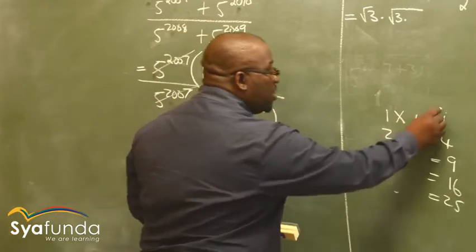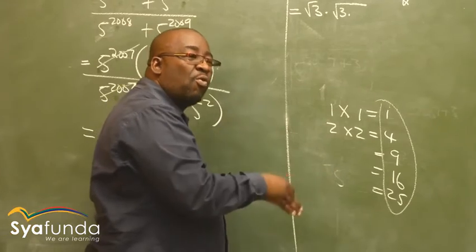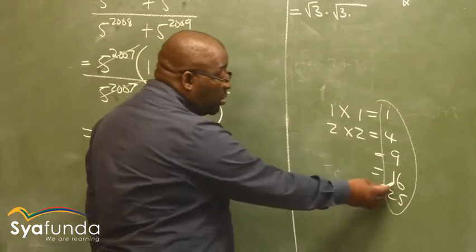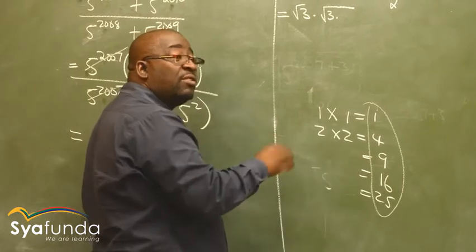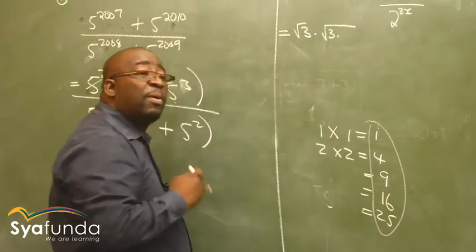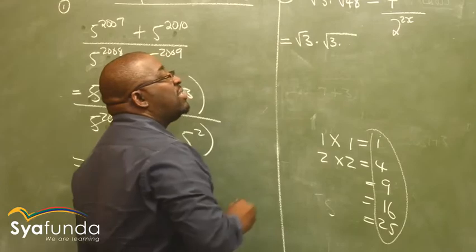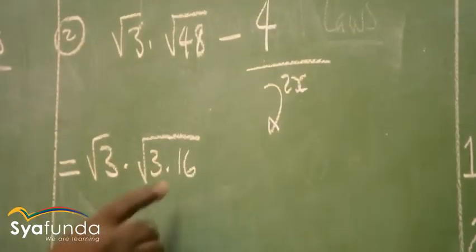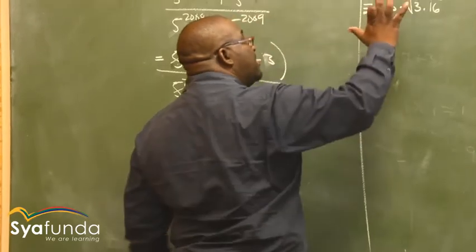So these are perfect squares. A perfect square is a number whose square root has no remainder. What is the square root of 16? It is 4 — no remainder. But you cannot find the square root of 3 without a remainder. So these are perfect squares. We break 48 such that there is a perfect square. 3 times what gives us 48? It is 3 times 16. Therefore 16 is a perfect square, and I know the square root of 16 equals 4.